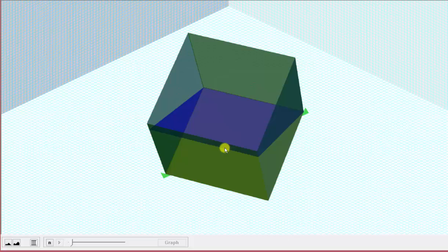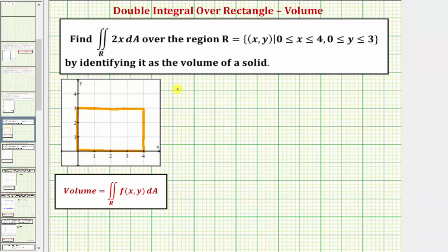Now let's go ahead and find the volume of this solid. The volume is going to be equal to the double integral of two x. Now we need to decide whether we're going to integrate with respect to x first and then y, or y first and then x. We'll actually show both.